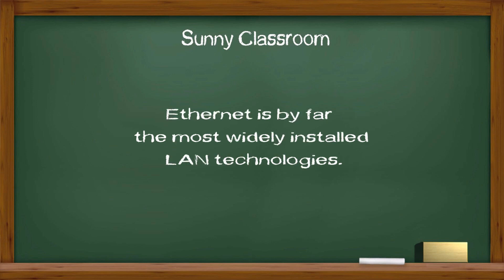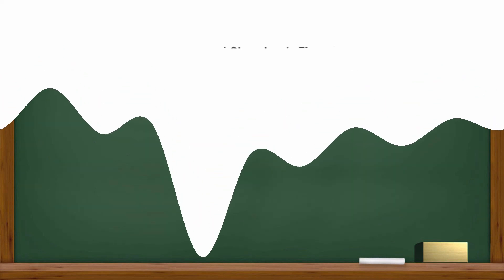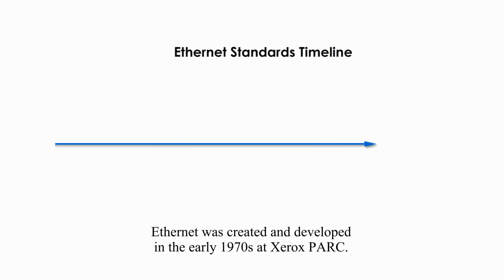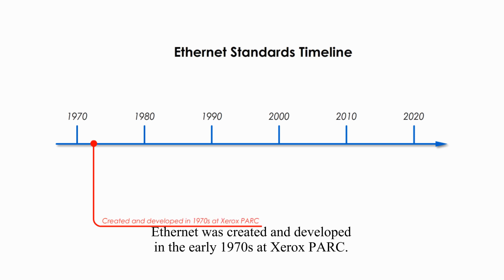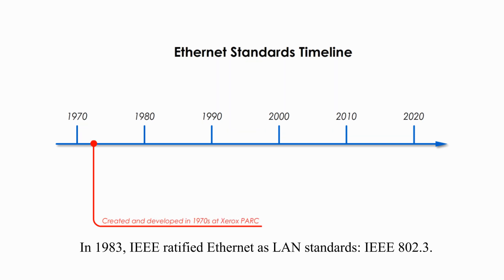Ethernet is by far the most widely installed LAN technology. Ethernet was created and developed in the early 1970s at Xerox PARC. In 1983, IEEE ratified Ethernet as LAN standard IEEE 802.3.